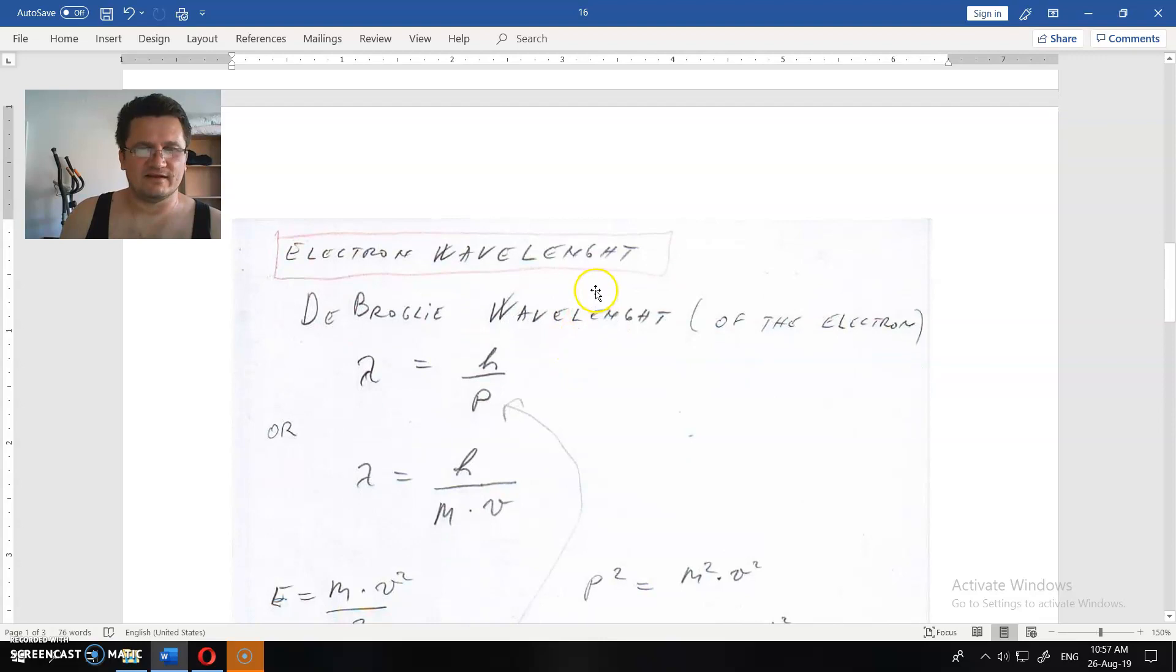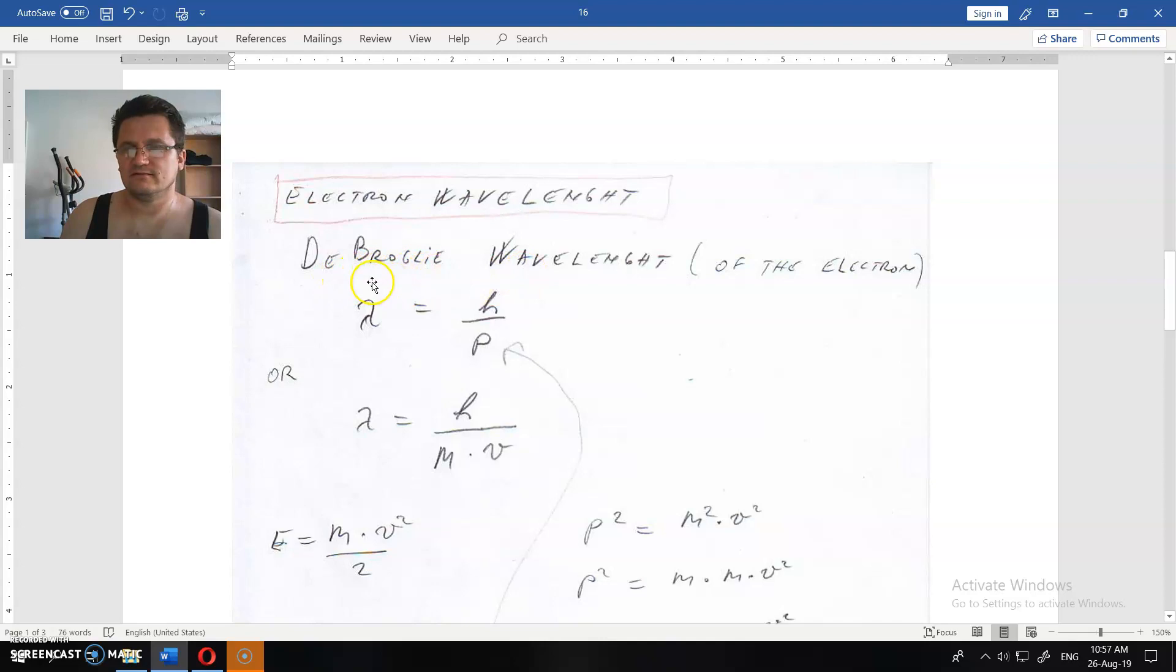Electron wavelength - this is the de Broglie wavelength of Louis de Broglie. So you could Google it to see what it is all about. Louis de Broglie says, and that is experimentally proven, that you have a wavelength for every object, not just light or waves or whatever.